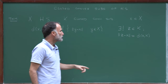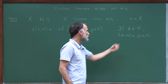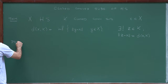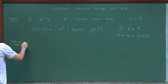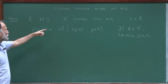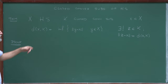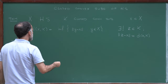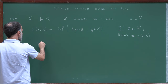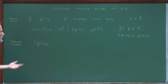And it's unique: if you have Z1 and Z2 which attain that infimum, they are equal. Here is the proof. You fix a closed convex subset K, take X in X, and define this infimum. Since it's an infimum, let me find a sequence Yn which almost attains it.